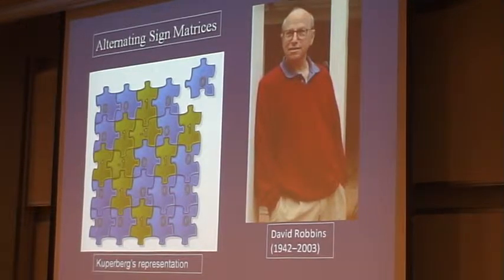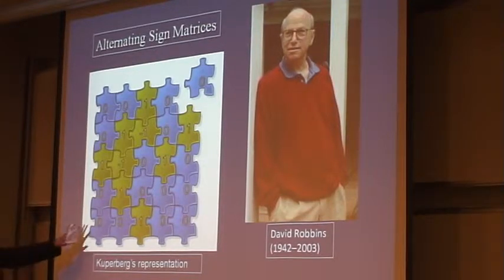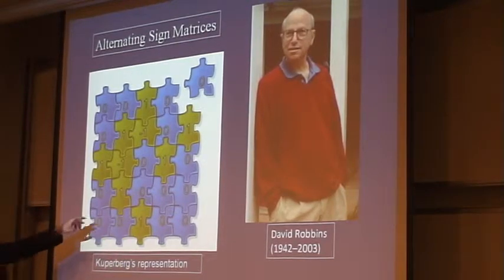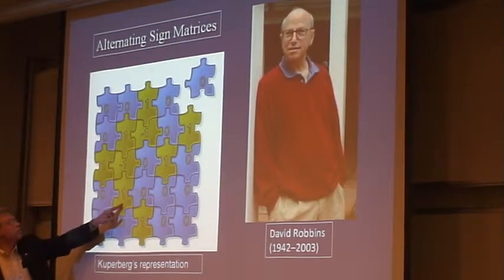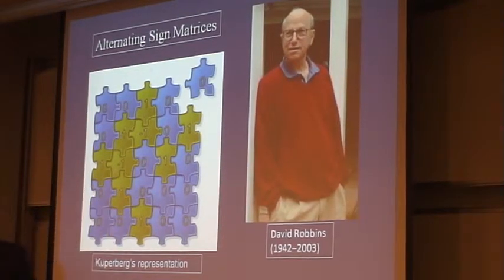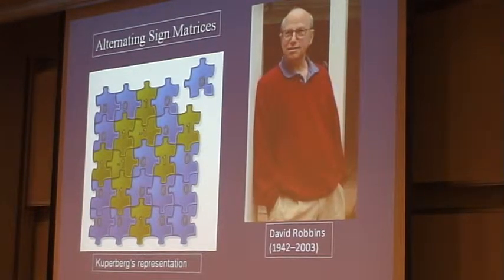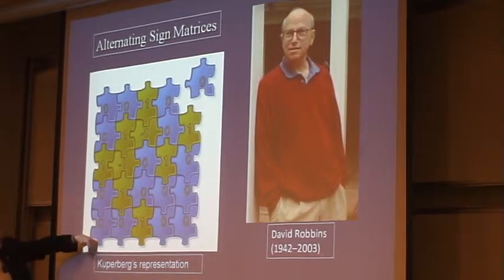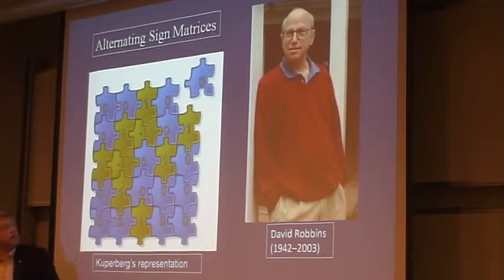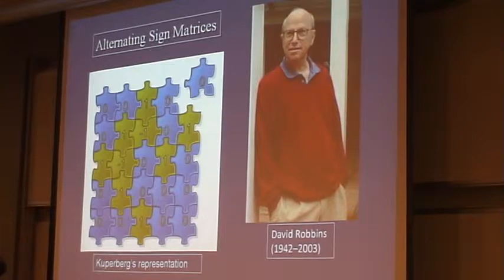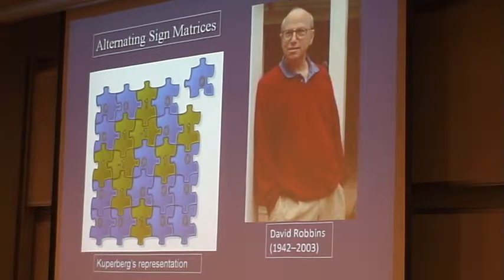It's called the six-vertex model because there are six possible configurations — four-choose-two at each of the vertices. If you think of this in terms of the four orientations for the zeros, and then the other two pieces — the plus ones that have the in-arrows left and right, or the minus ones that have the in-arrows top and bottom — it's easy to see that once you've placed all of the green jigsaw pieces, the blue jigsaw pieces are uniquely determined.